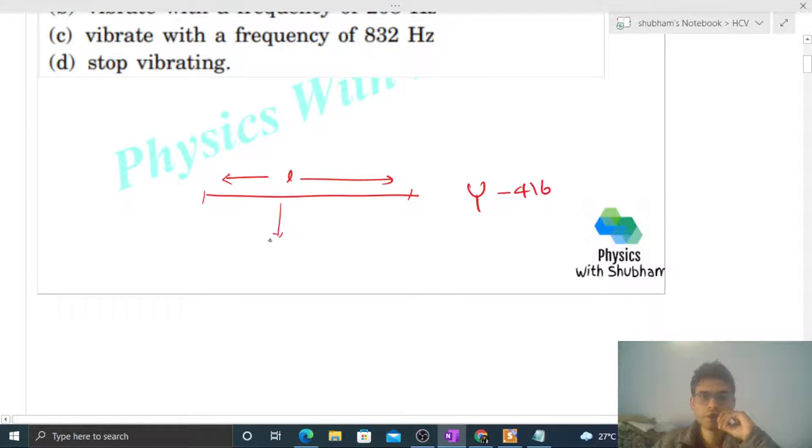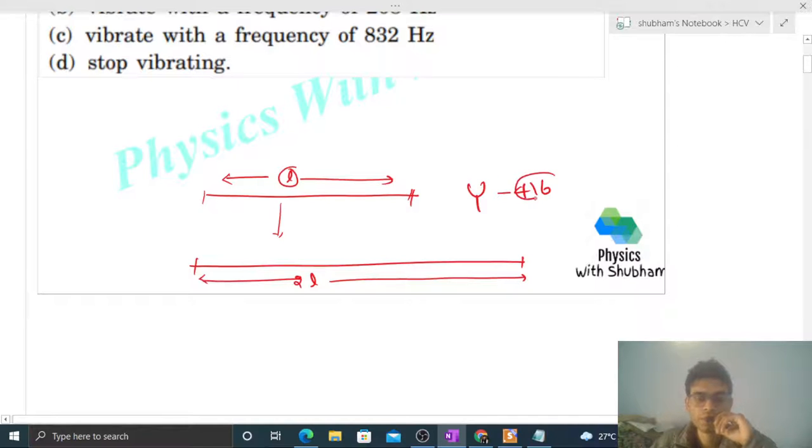Now what we do is we double the length of this sonometer wire. Then the frequency of the wave in the wire will not change. You see, when the length was l, the frequency was 416. When the length becomes 2l, the frequency will still be 416, because the frequency of the wave depends on the tuning fork.